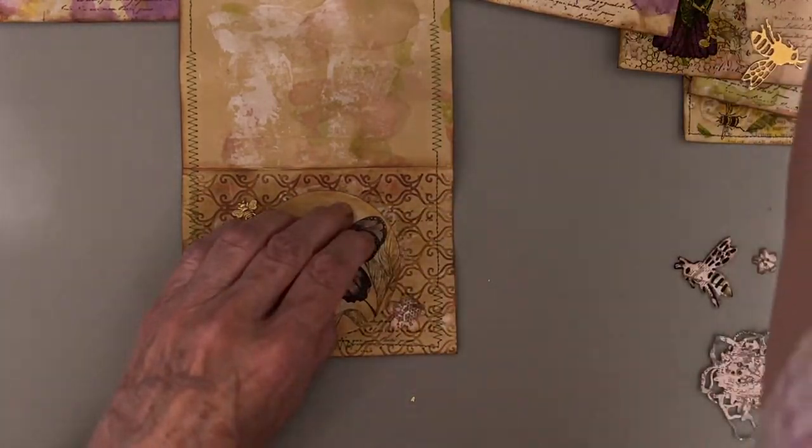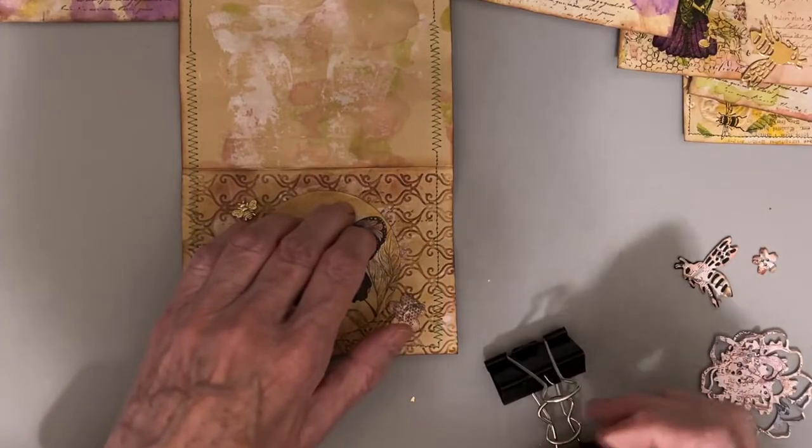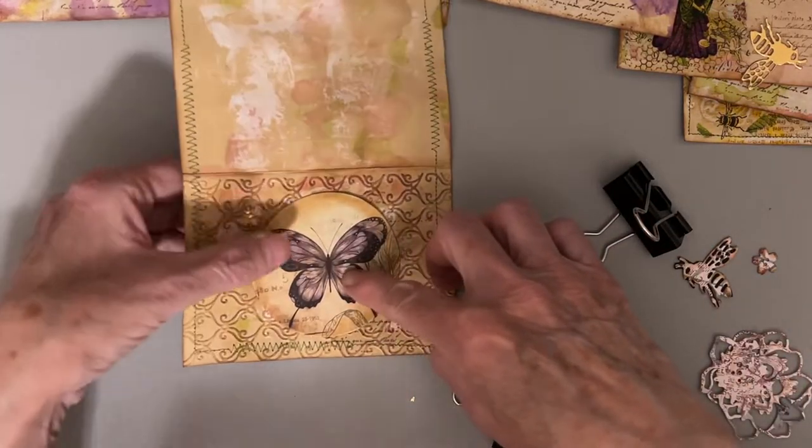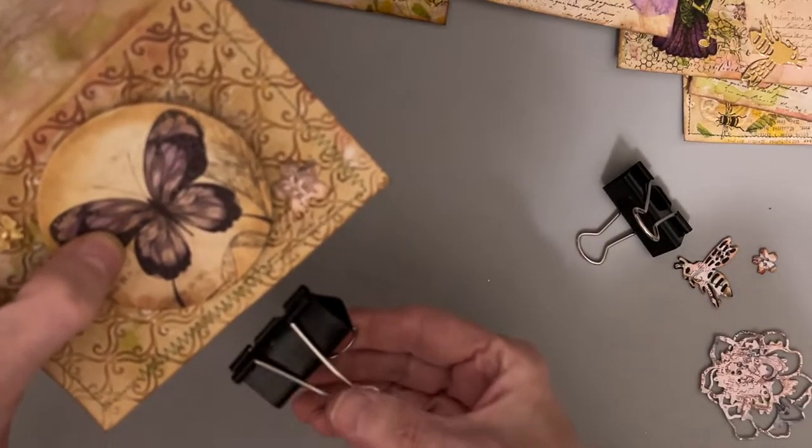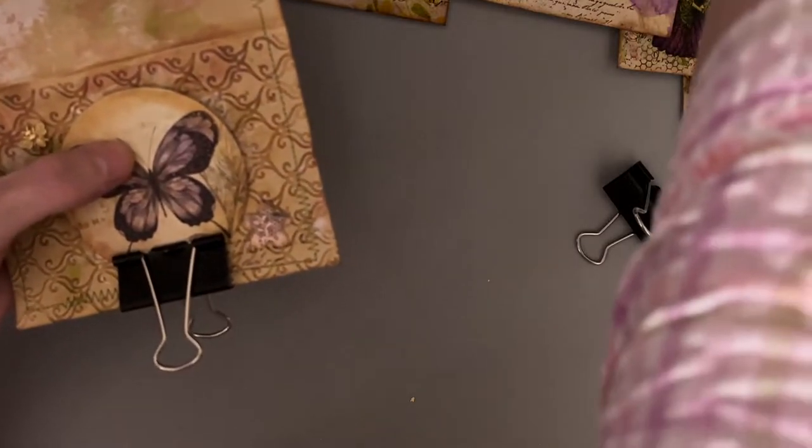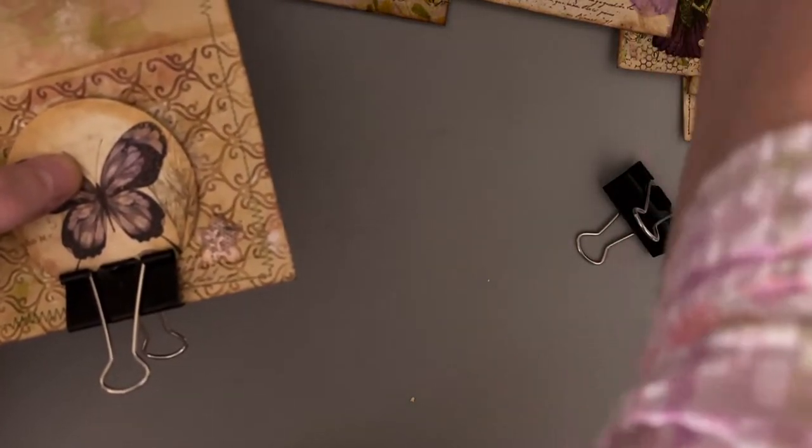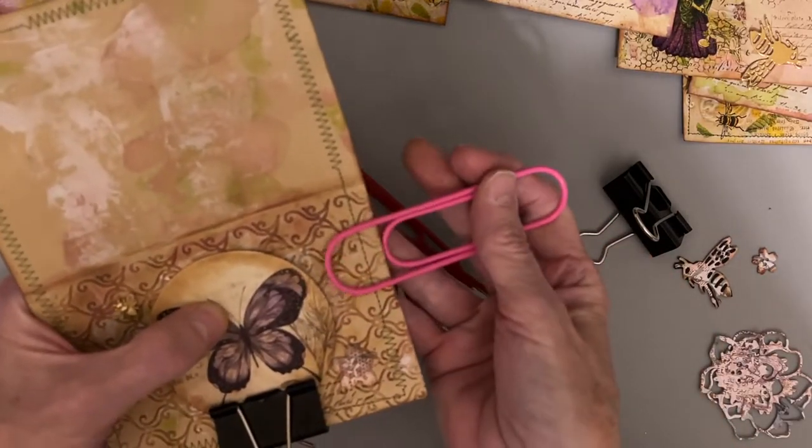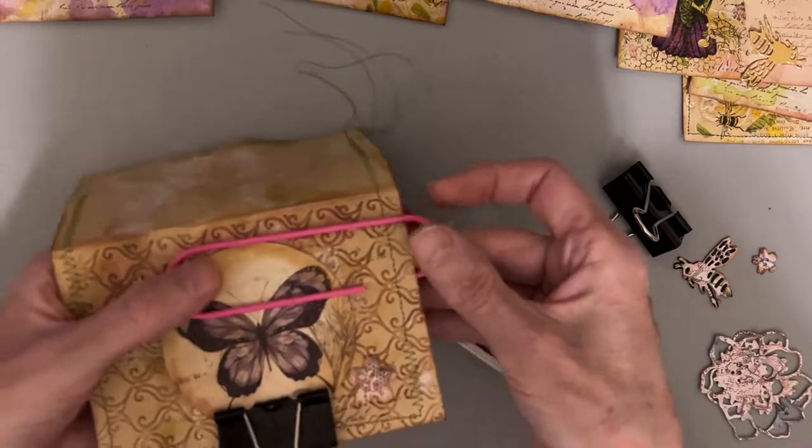Oh, and the other thing I had done is I sewed around the index card. So, you see I did a little stitching there. Now, because this is embossed, it's going to be a little bit difficult for this to glue down. So, that's why I'm going to take these paper clips to hold it down while that glue attaches.